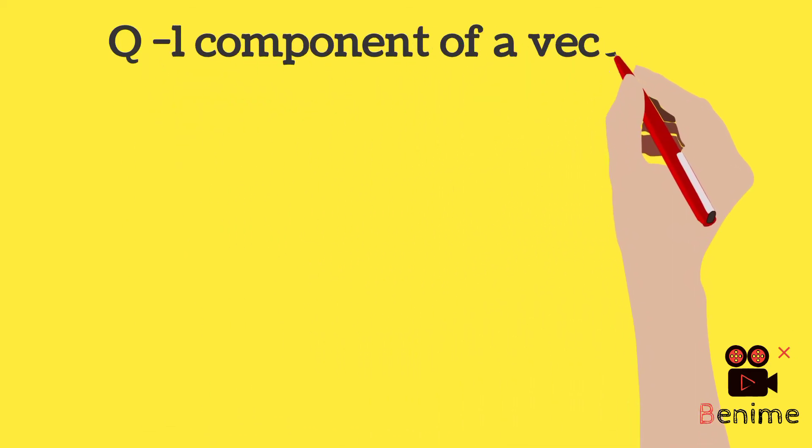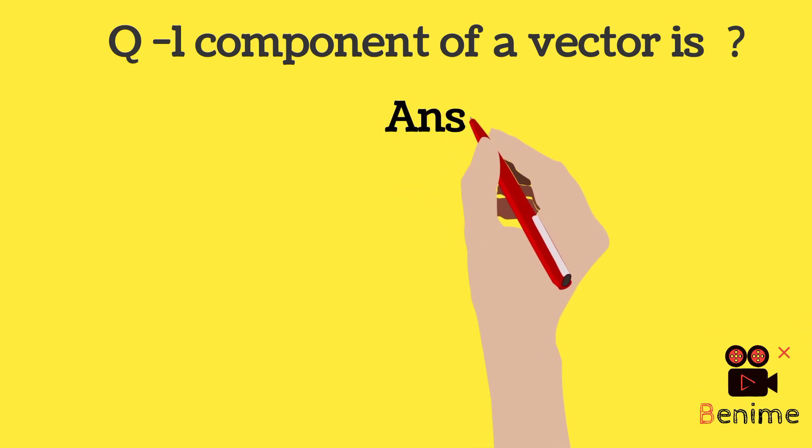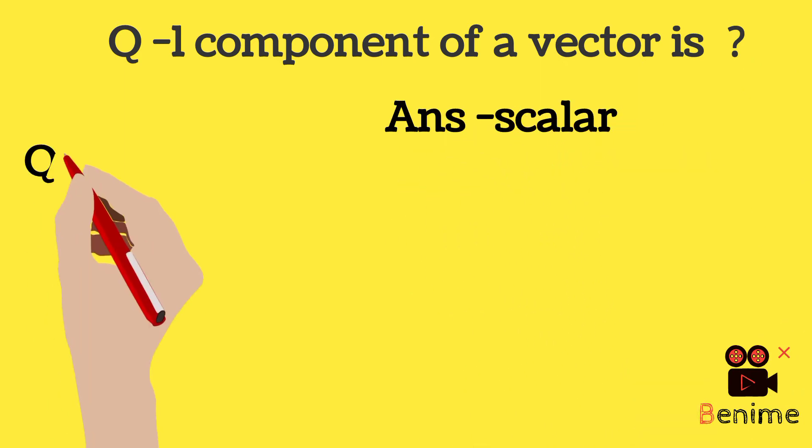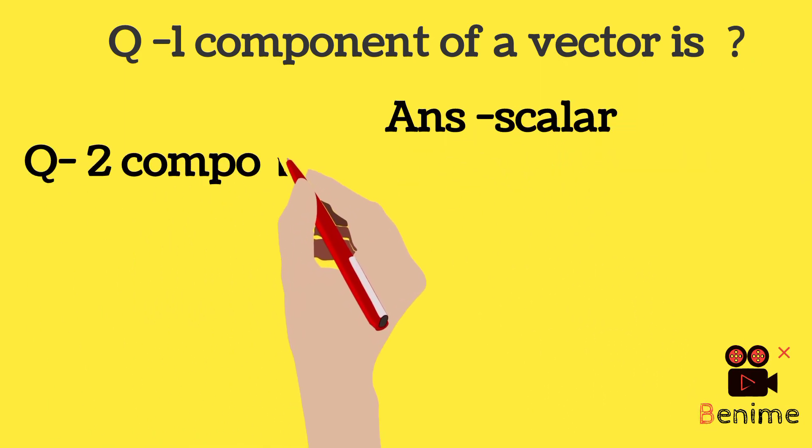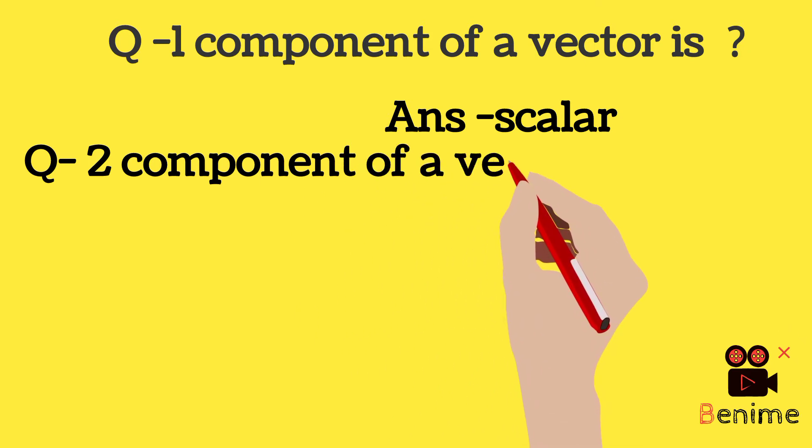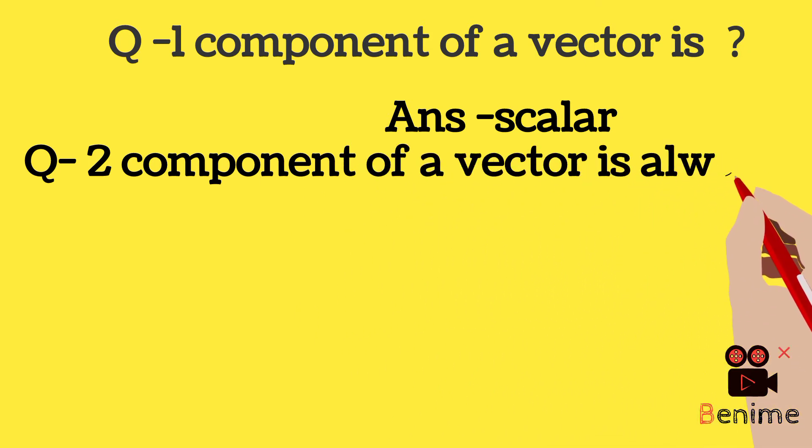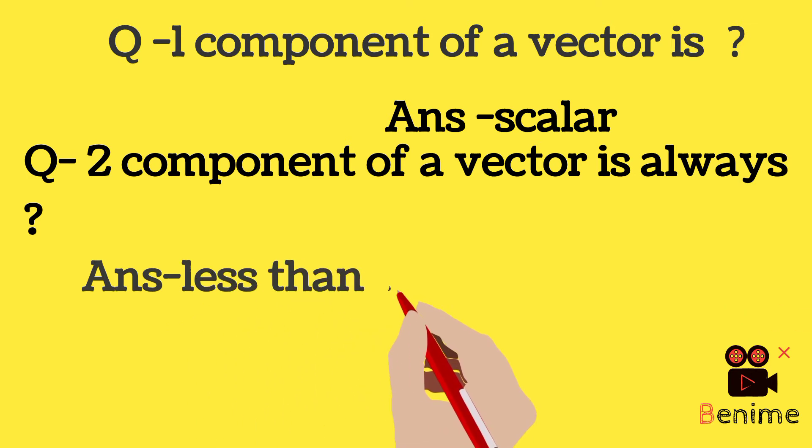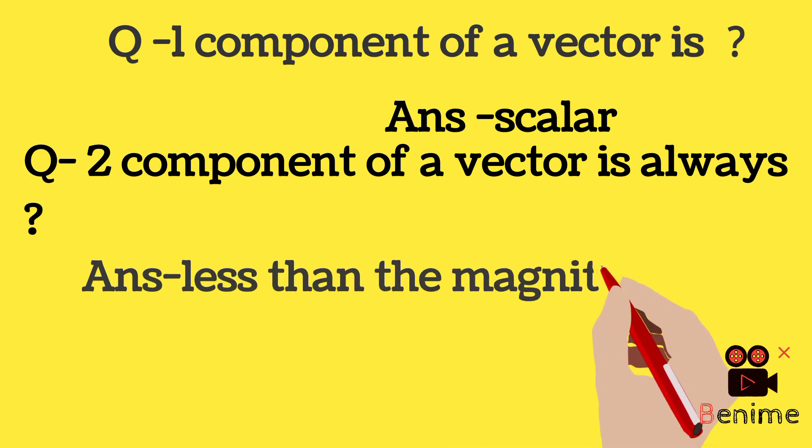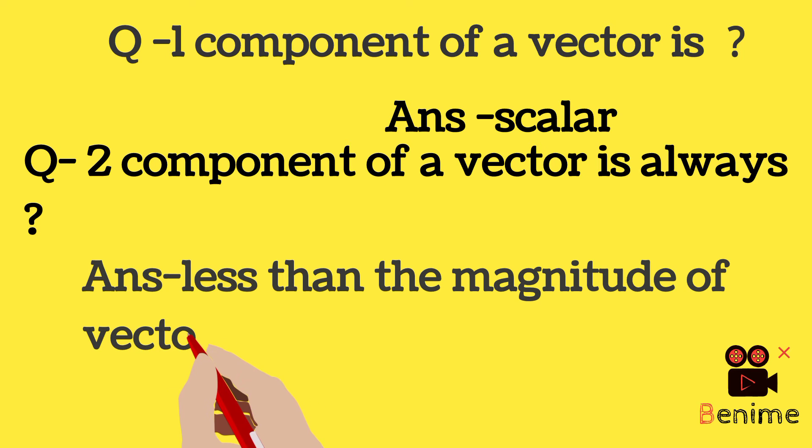Component of a vector is a scalar. Component of a vector is always less than the magnitude of the vector.